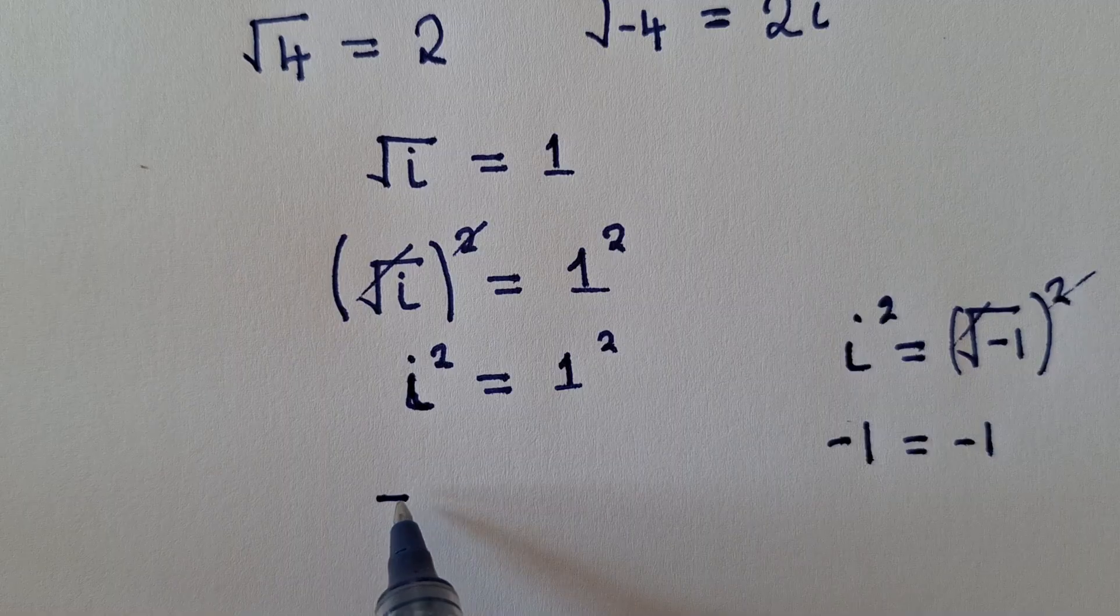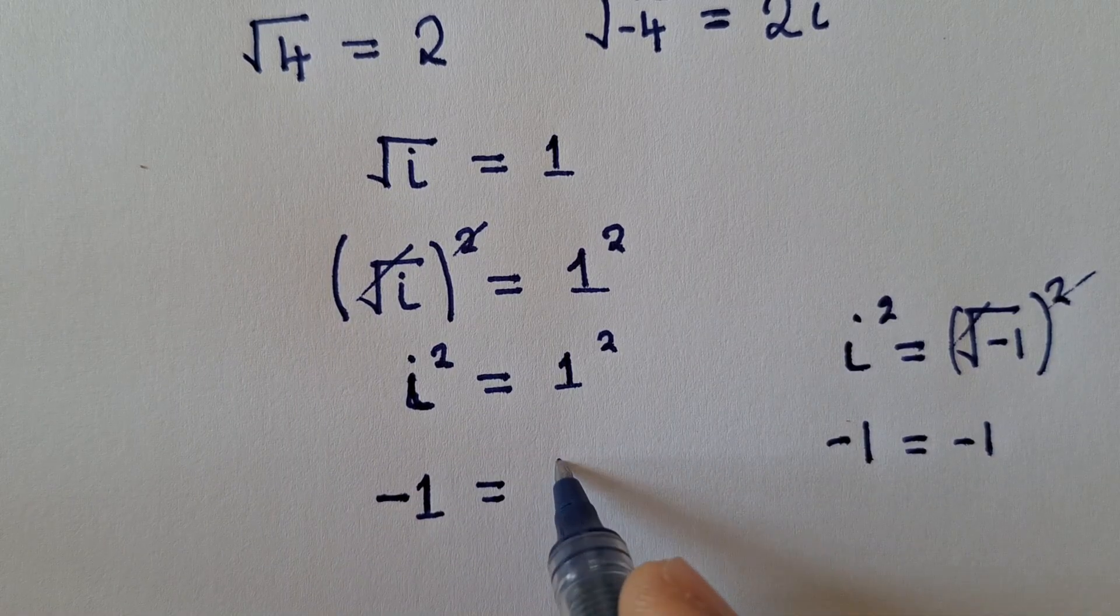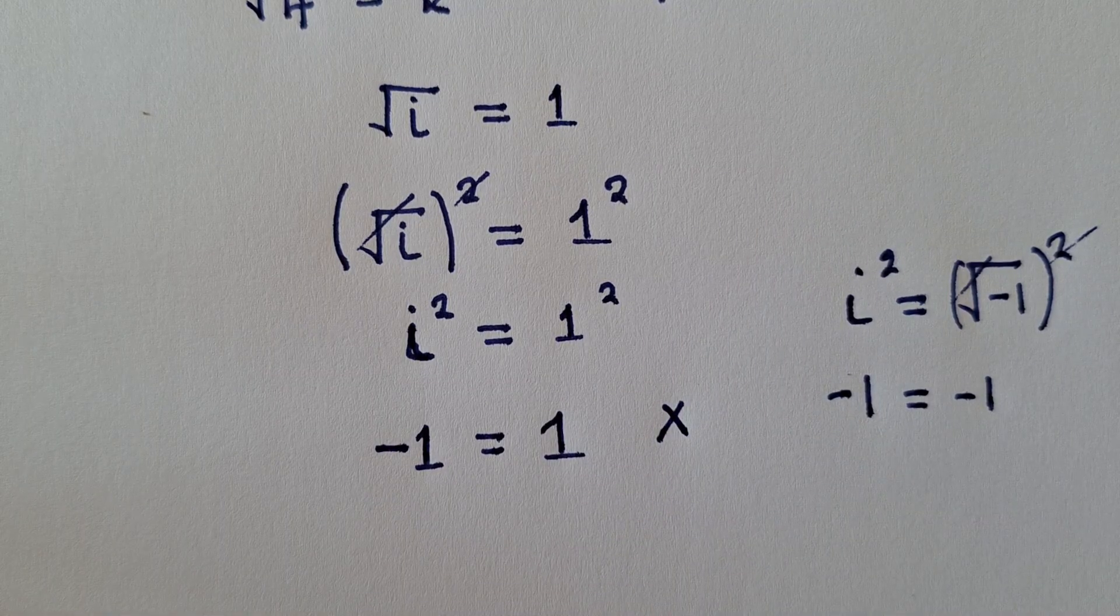But here, when we introduce, we're going to get negative 1 this side, which is equal to 1. And when you look at this, these two are not equal to each other.